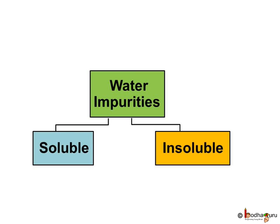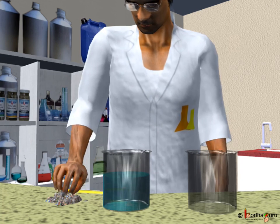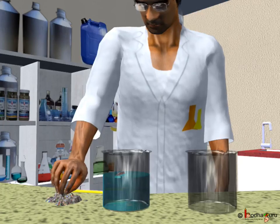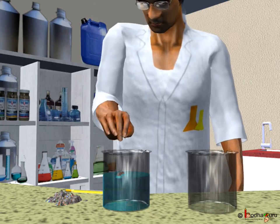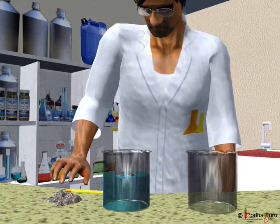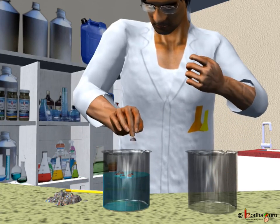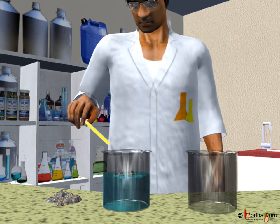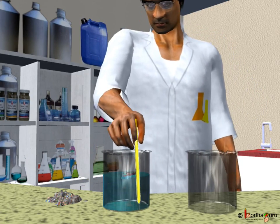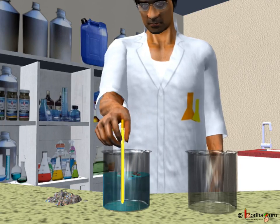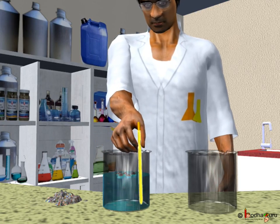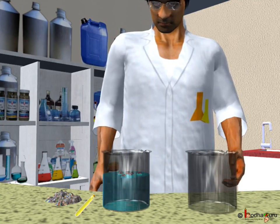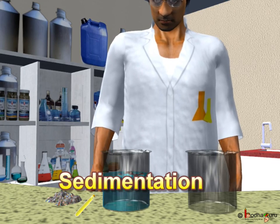The insoluble impurities can be removed by a few methods. First, let us look at a simple process called sedimentation. In this method, we keep the water undisturbed for some time. The insoluble particles settle down at the bottom, leaving the clear water on the top. This process is called sedimentation.